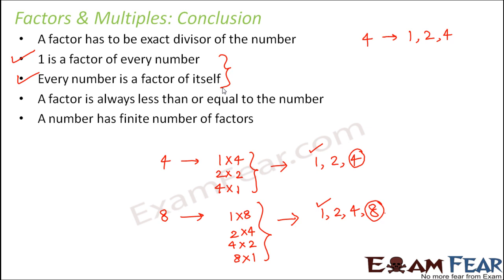A number has finite number of factors. Finite means fixed number or limited number of factors. So if you consider this number 4, how many factors does number 4 have? 1, 2, and 4. So basically it has 3 factors. You think of number 8, how many factors does it have? 1, 2, 3, 4. So it has 4 factors and these number of factors remain constant. So 4 cannot have more than 3 factors. These are the only possible factors for 4. So for every number, you have a finite number of factors.